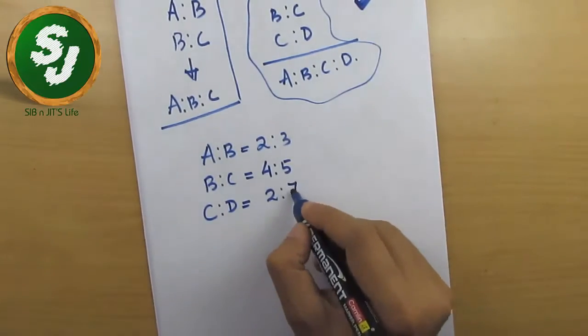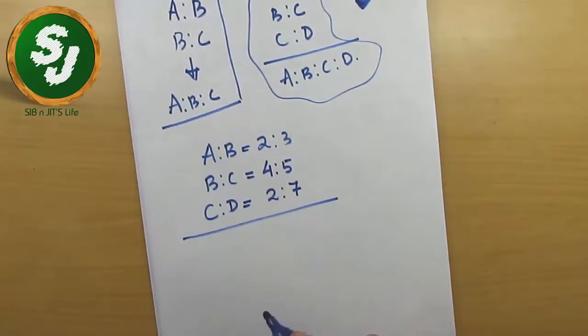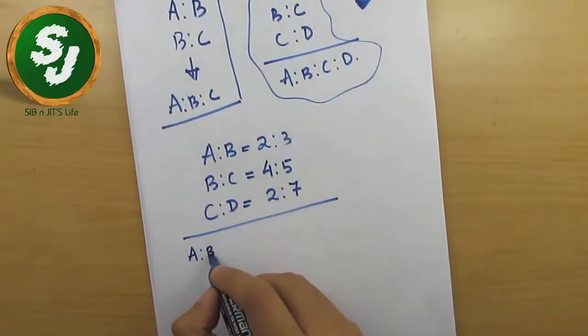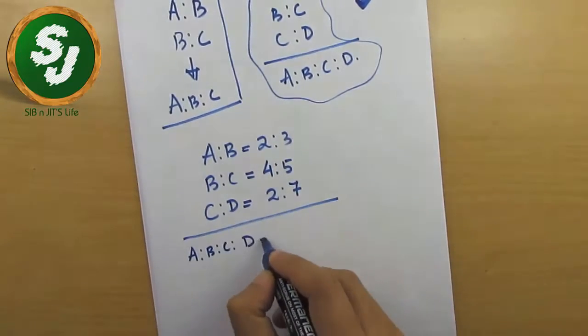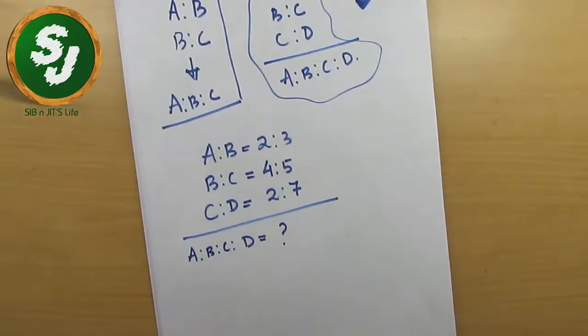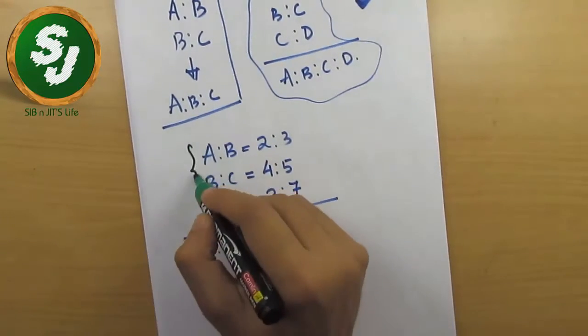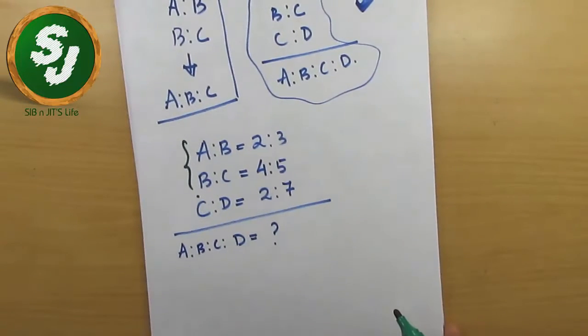And I'm asking you a very simple question: find the value of A is to B is to C is to D. So the first step is that you should combine these two which you have understood very well. A is to B and B is to C, 2 is to 3 and 4 is to 5.